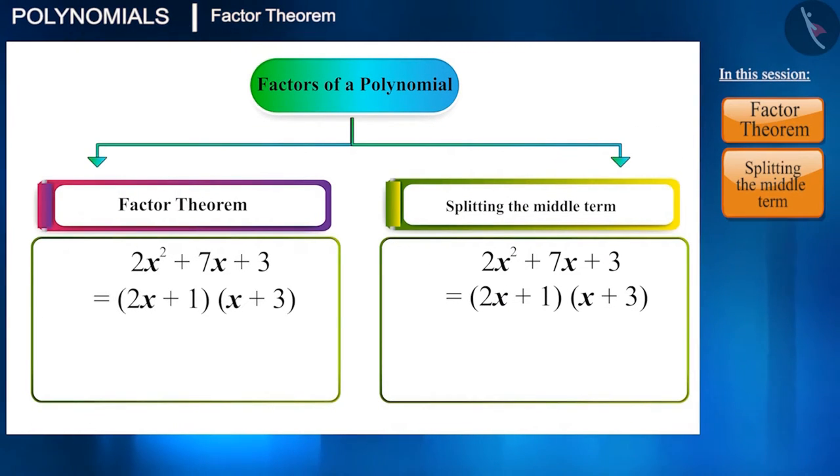So, here we can see that in both the situations, we get the same factors. You can check whether the polynomial is being reduced to 0 by finding the value of x from both the factors.